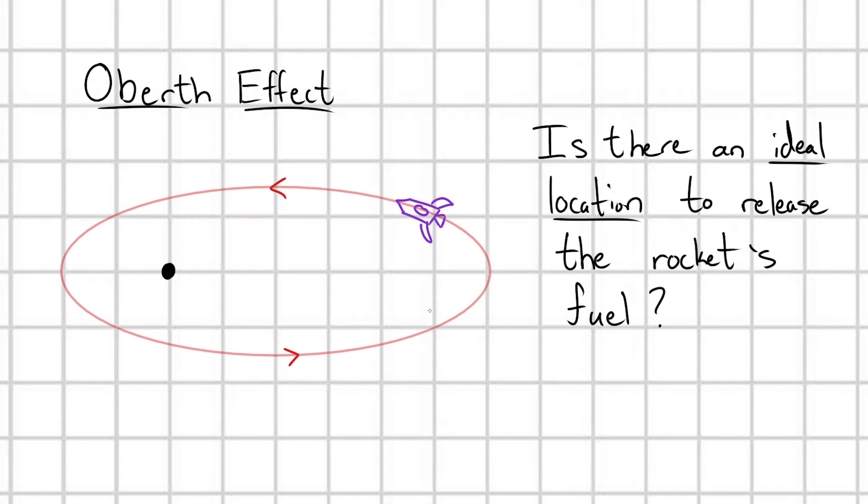Hello there. Suppose I have a rocket in an elliptical orbit around this planet here. Now this rocket, it has a limited amount of fuel on board and so we have to be careful here. And so we want to ask, is there some ideal location in this elliptical orbit in order to make the best use out of the fuel on the rocket?